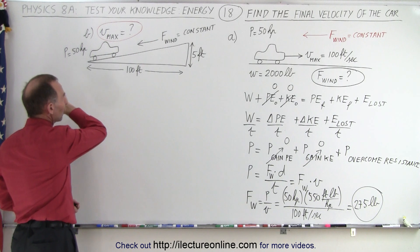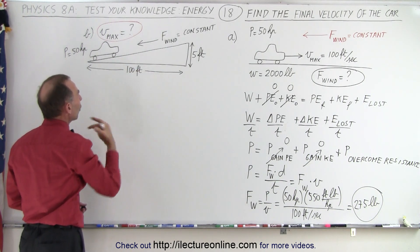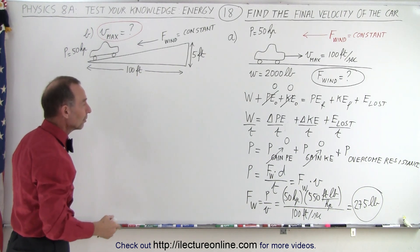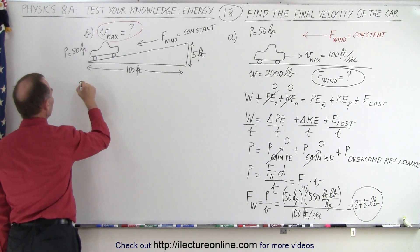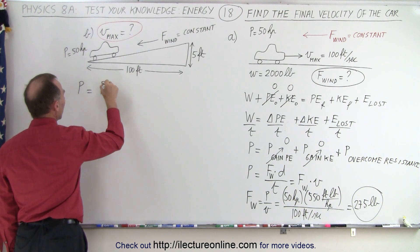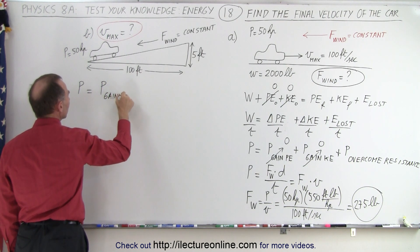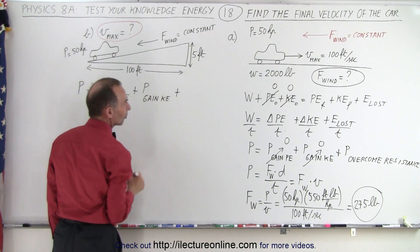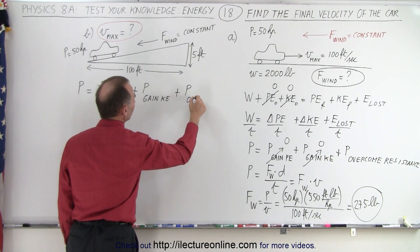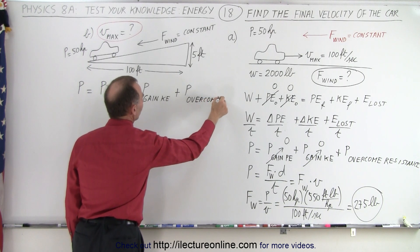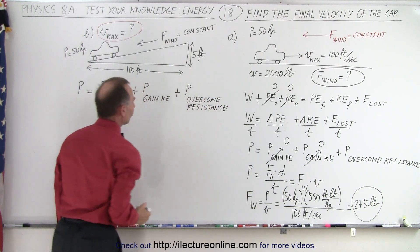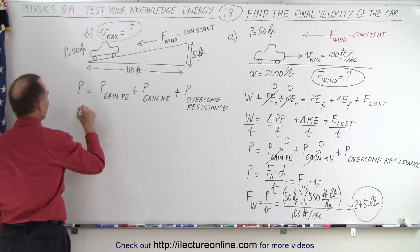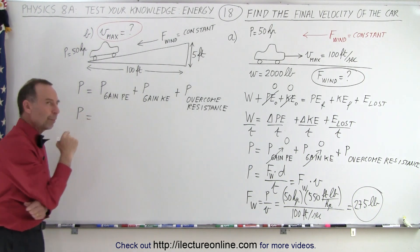Next, the car starts driving up the hill. Not only do we need to fight the force of the wind, we also need to gain height, which means additional power is required. Using the same equation: the power provided by the engine equals the power required to gain potential energy, plus the power needed to gain kinetic energy, plus the power to overcome wind resistance. As before, power can be written as force times velocity.